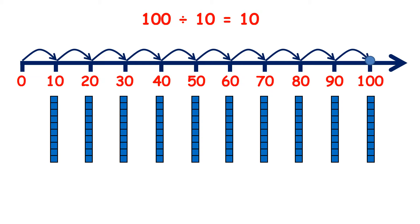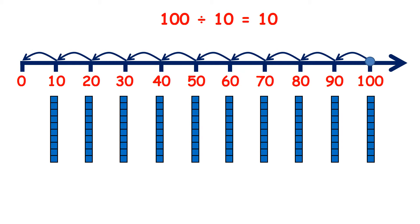So if we have 100, we can make 10 lines of 10. We've been looking at division as counting forwards, but that isn't really what division is. Multiplication is repeated addition, but division is repeated subtraction. So 100 divided by 10 is 10, because if we start on 100 and take away 10 each time, we need 10 jumps of 10 to get to 0.